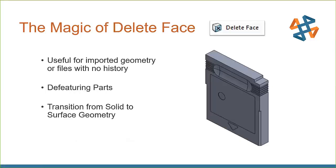The Delete Face tool is really useful when you don't have a feature history tree, as you can interact with your dumb solid by deleting faces and simplifying things. It can defeature parts such as deleting holes. It's also one of our primary commands for transitioning from a solid body to a surface body. With that, we're going to jump into SOLIDWORKS.